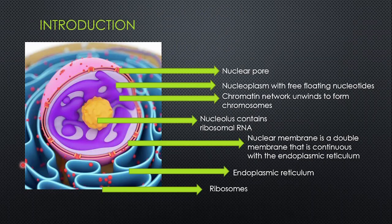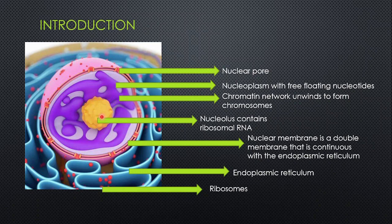This is just the department's guidelines. In the introduction, we have the structure of the nucleus. Here we see the nucleopore and the nucleoplasm with free-floating nucleotides. There's a chromatin network, which unwinds to form chromosomes during interphase of cell division. Then we get the nucleolus, which contains ribosomal RNA. We have the nuclear membrane, which is a double membrane continuous with the endoplasmic reticulum, and on the endoplasmic reticulum are ribosomes.